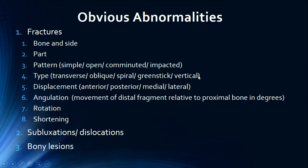Then we look at the type of fracture: transverse, oblique, spiral, greenstick, or vertical. We then assess for any displacement, which could be anterior, posterior, medial, or lateral. Then we look at the angulation of the fracture by assessing the movement of the distal fragment relative to the proximal bone in degrees — this is different from displacement. Finally, we look for any rotation or shortening of the distal fragment.